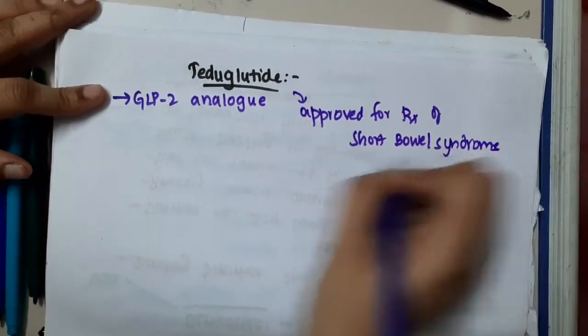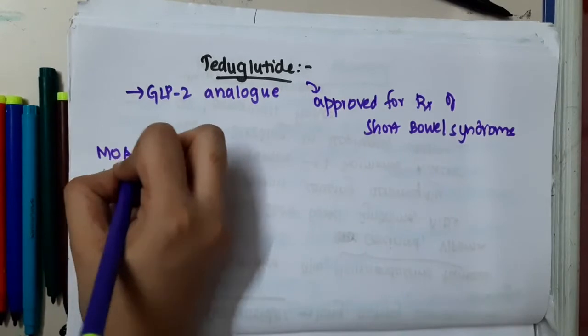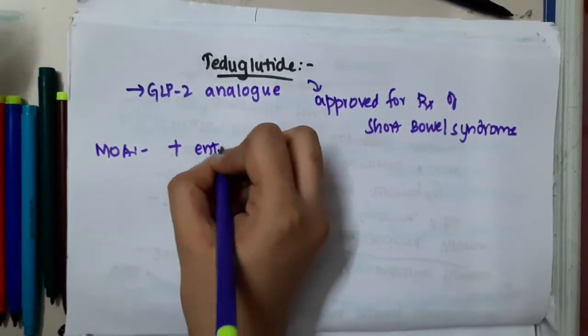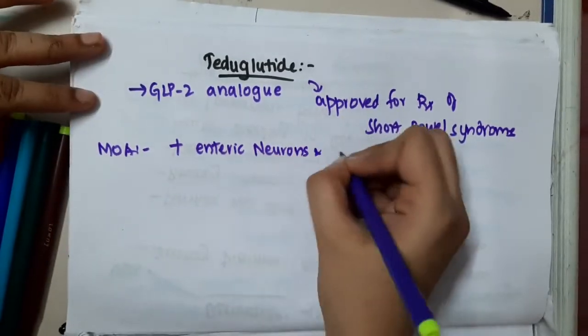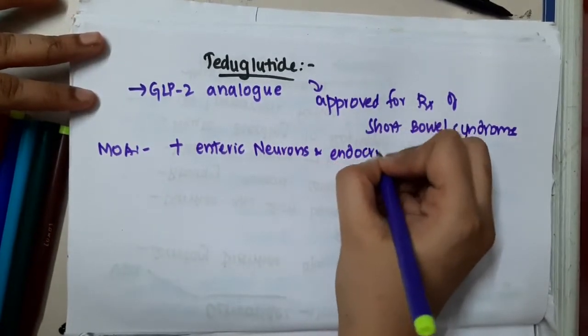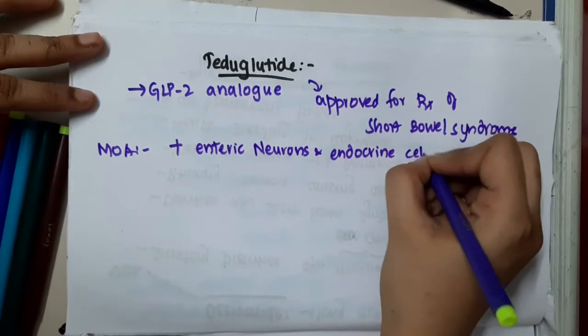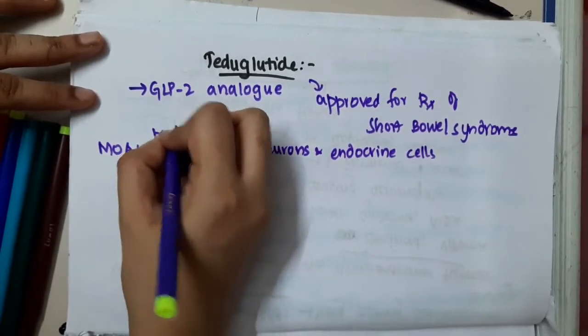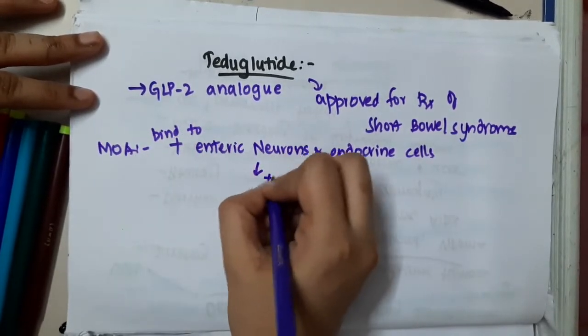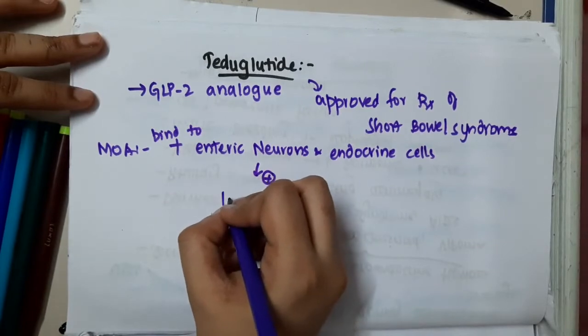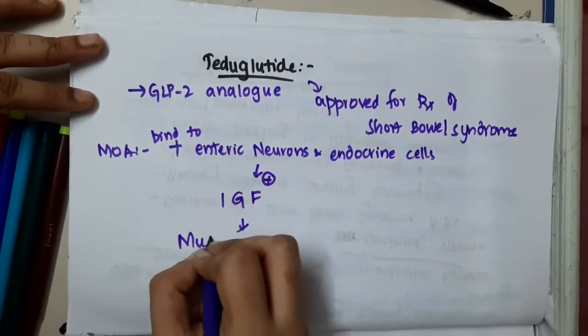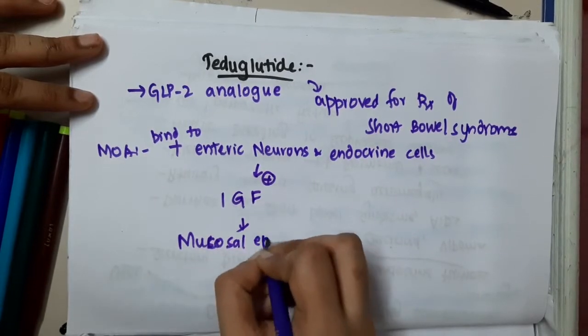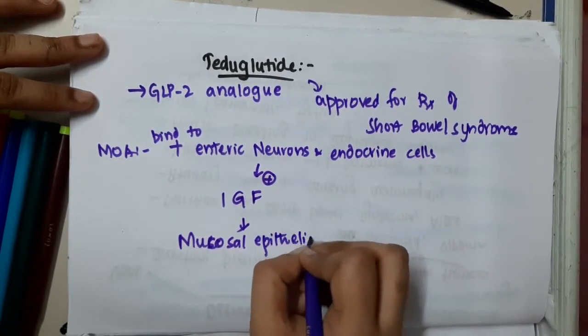Now, what is the mechanism of action of Teduglutide? This Teduglutide will bind to the enteric neurons and endocrine cells, and thus it will stimulate hormones like insulin-like growth factor. This will cause mucosal epithelial growth and will also increase fluid absorption.